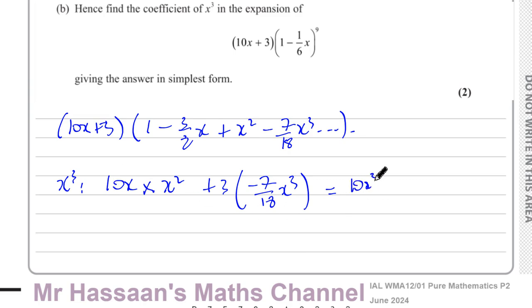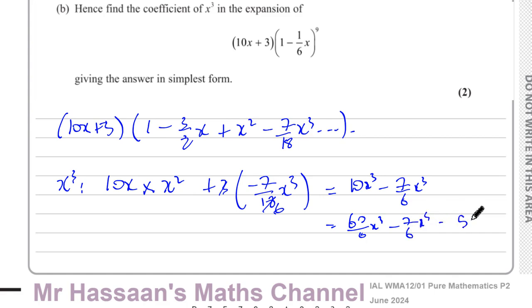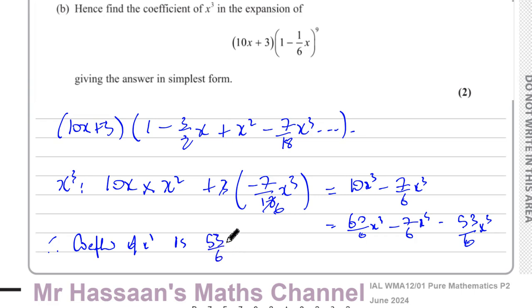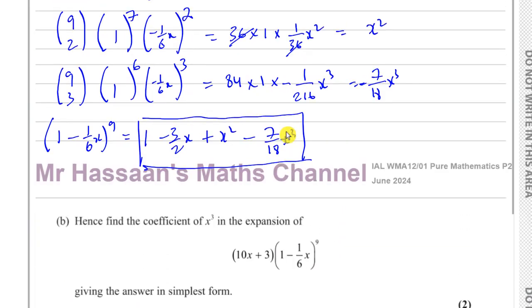So the x cubed contribution is: 10x times x squared gives 10x cubed, plus 3 times negative seven-eighteenths x cubed. Since plus times minus is negative, and 3 over 18 simplifies to give negative seven-sixths x cubed. Combining them: 60 over 6 x cubed minus 7 over 6 x cubed equals 53 over 6 x cubed. The question asks for the coefficient of x cubed, so the answer is 53 over 6 — we don't write the x cubed itself since it asks for the coefficient only.